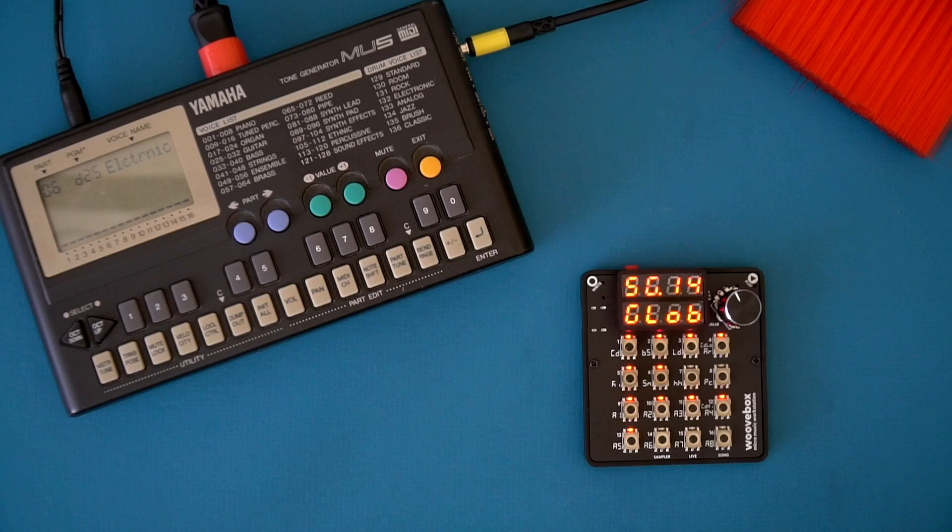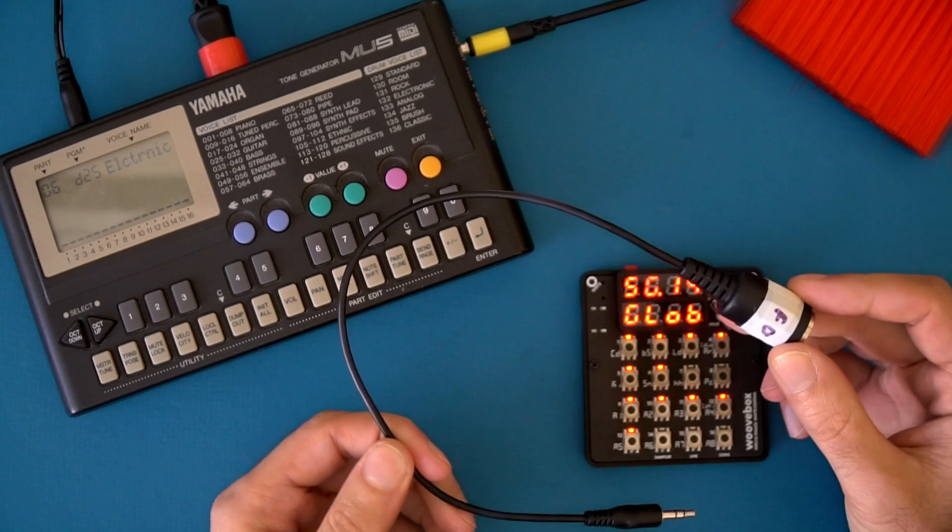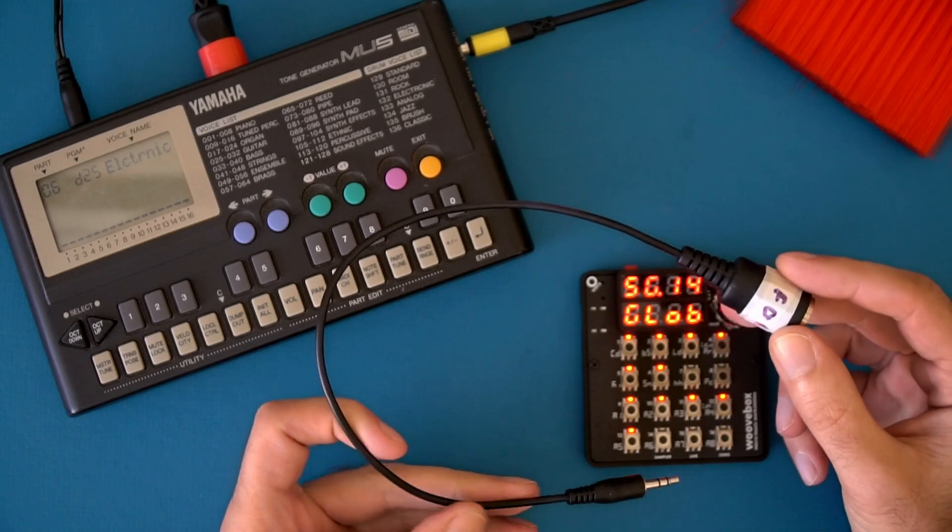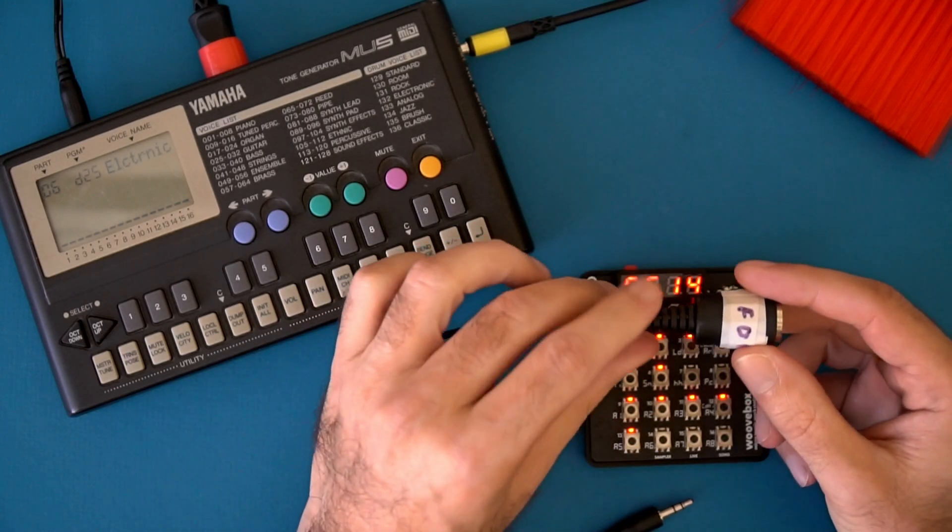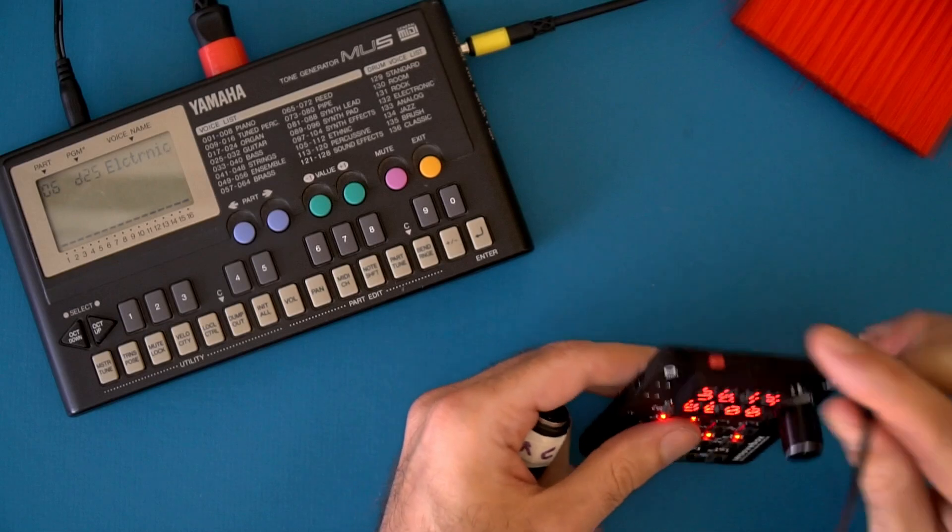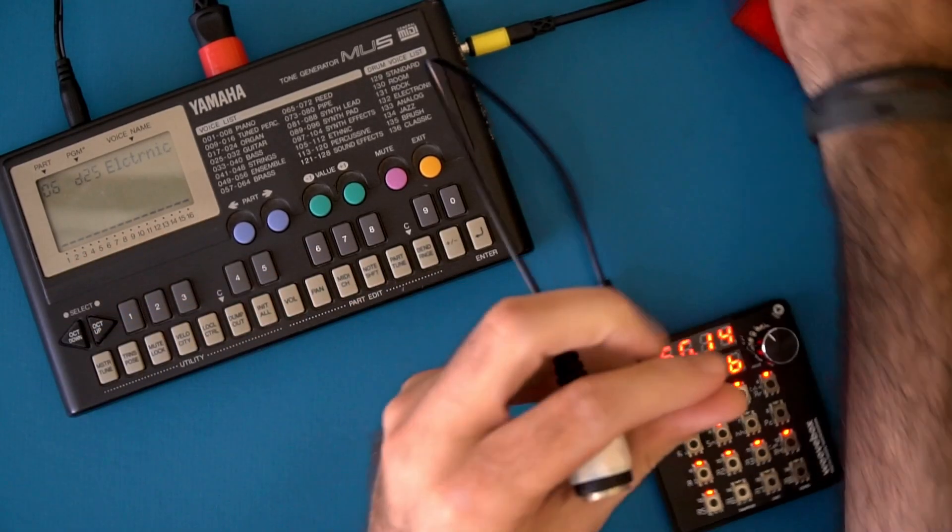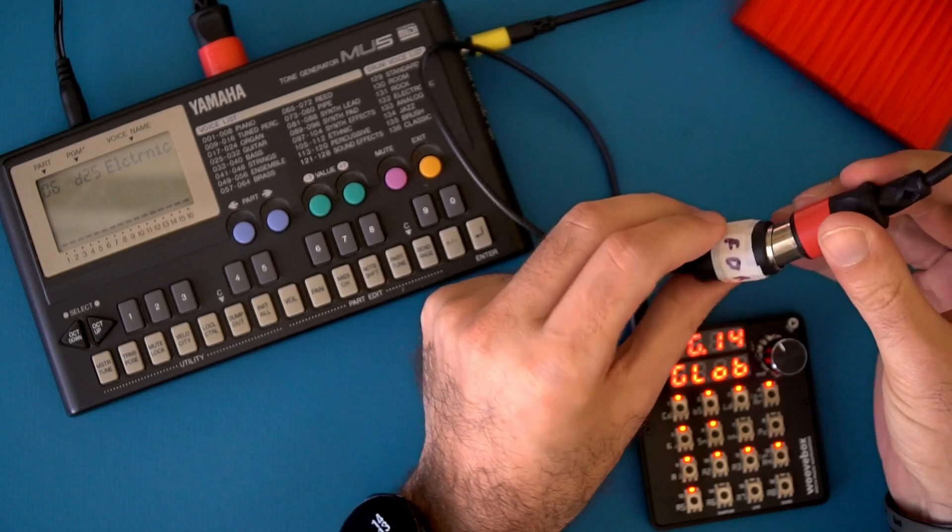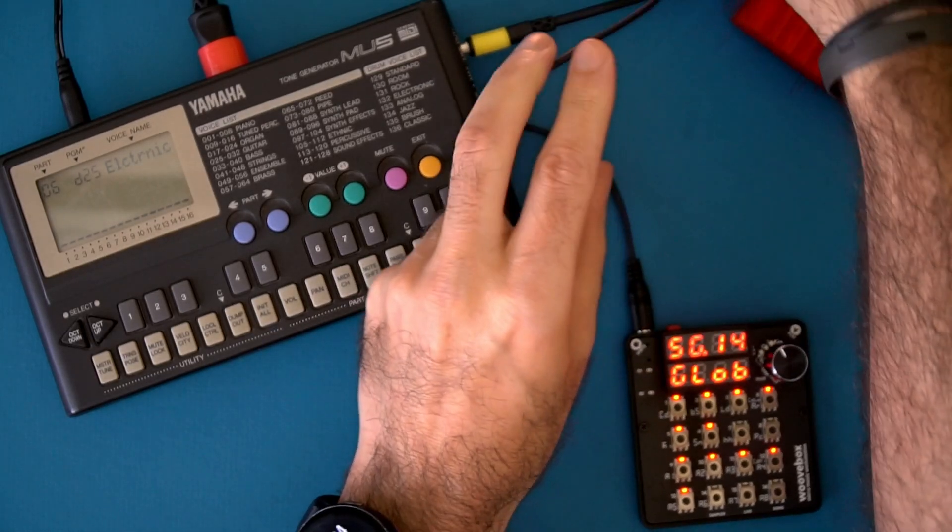The first thing you're going to need is a TRS to MIDI cable. Now there are two types of these, type A and type B. The one that works with the Woof Box is type A. So you plug it into the MIDI out port right here, and then you plug it into the MIDI cable going to your external gear.